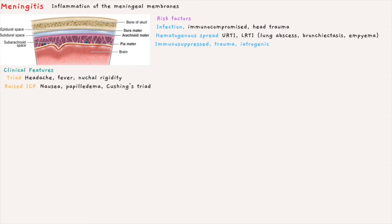So what are the clinical features? The classic triad is headache, fever, and nuchal rigidity, so neck stiffness.